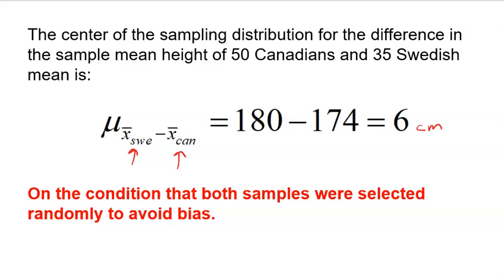If the true average for Swedish men is 180 and Canadian men 174, there should be a difference of 6 centimeters. That should be what the difference is. But I know that not every two samples are going to have that difference. I might get a difference of 5 centimeters or 4 centimeters or 6.2 centimeters. There's going to be a lot of possible differences out there. The mean of all of them should be the truth, as long as our samples are selected randomly to avoid being biased.